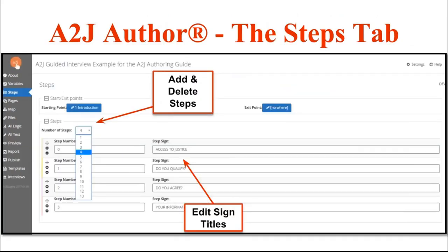The next tab down is the Steps tab. If you think about steps, you think about them in an outline — they're the big headline chunks. You can have up to 13 steps in an interview; by default an interview will come with four. You can edit the name of the steps and you can add or delete steps from this tab as well.